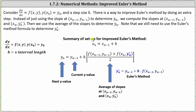Looking at our notes below, x sub n is equal to x sub n minus one plus h. Then y sub n using the improved Euler's method is equal to y sub n minus one plus h times the average of the slopes at x sub n minus one comma y sub n minus one and x sub n comma y sub n star. To determine y sub n star, we use the original Euler's method formula: y sub n star equals y sub n minus one plus h times f of x sub n minus one comma y sub n minus one. Let's take a look at an example.